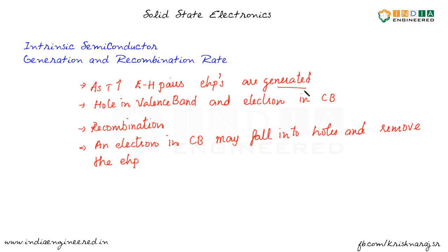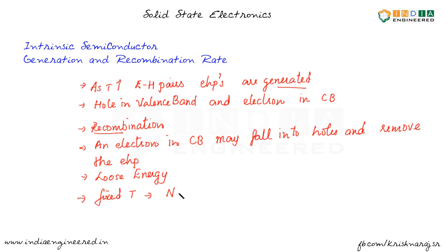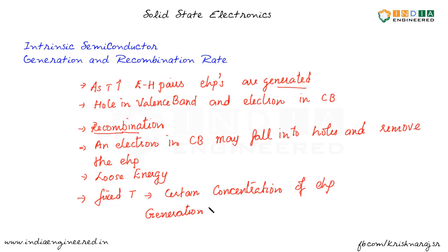So we have two phenomena here: generation and recombination. Generation is the process of creation of an electron-hole pair, and recombination is the process of removal of an electron-hole pair. For generation, the electron gains energy; in recombination, the electron loses energy. At a fixed temperature, the number of EHPs tends to stay at a particular value, which means there should be some balance between generation rate and recombination rate. Only if there is a balance between these two can we say that a certain concentration of electron-hole pairs is maintained at that fixed temperature.